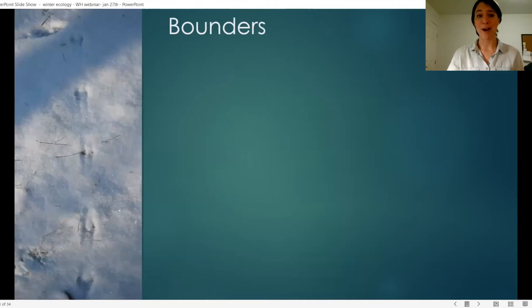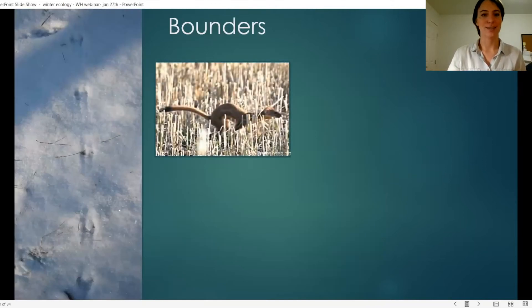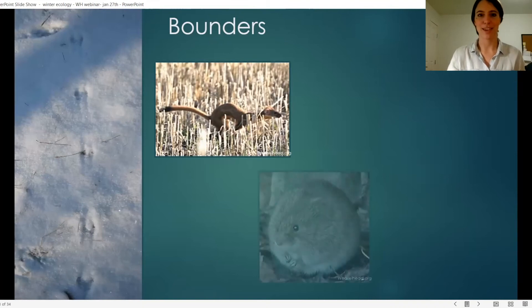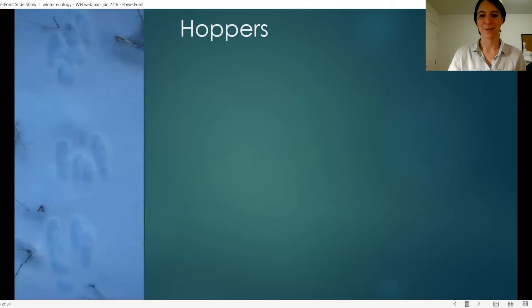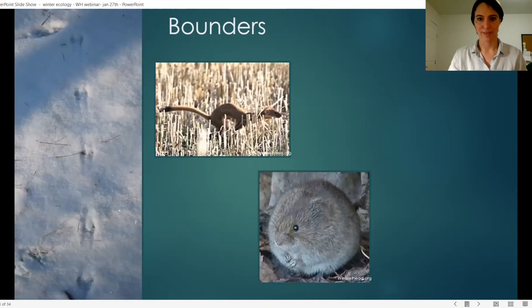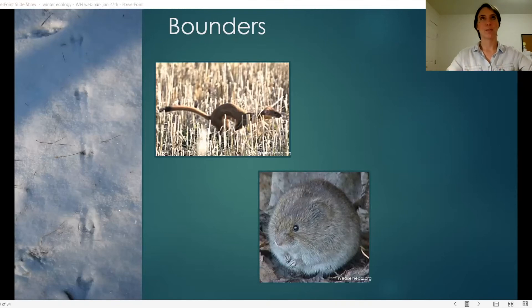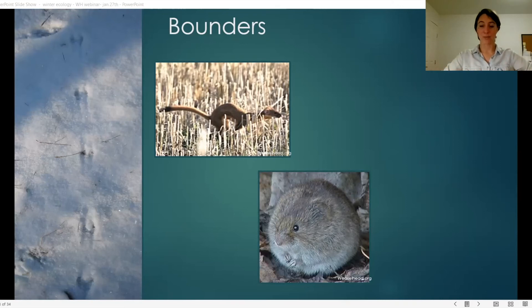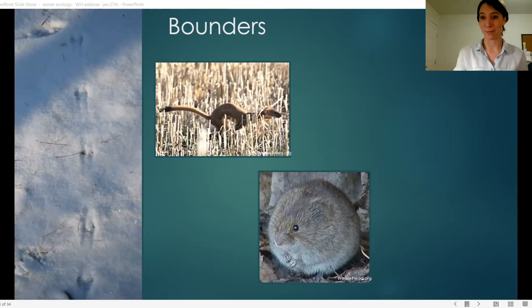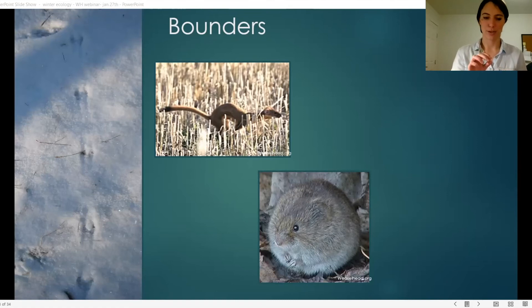That brings us to bounders. I actually saw some weasel prints in the Weaselhead earlier this week, which was very fitting. A bounder's front feet land first, and then their back feet land where the front feet just were. Many animals from the weasel family are all bounders, so you'll see these very symmetrical prints with two tracks at a time, side by side.